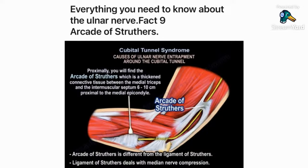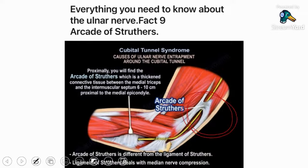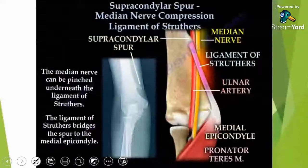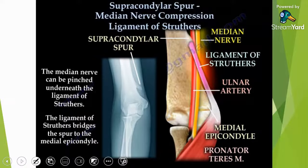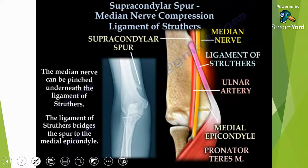The arcade of Struthers is another cause for compressing the ulnar nerve around the elbow. This is different from the ligament of Struthers, which can pinch the median nerve. The ligament comes from a bony spur and compresses the median nerve, whereas the arcade of Struthers is a different structure entirely.